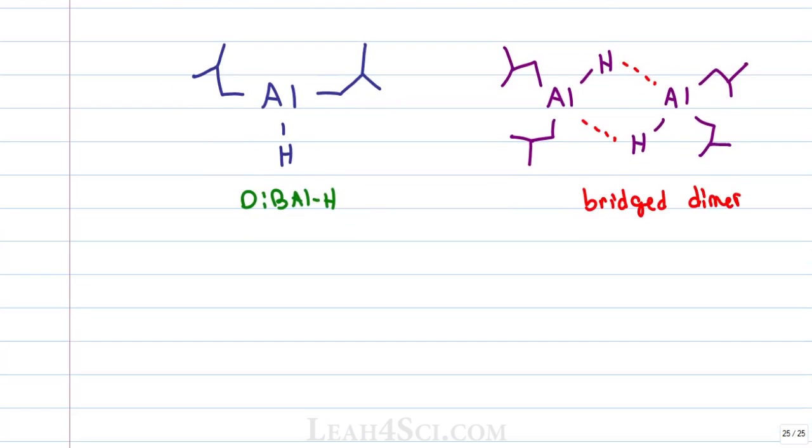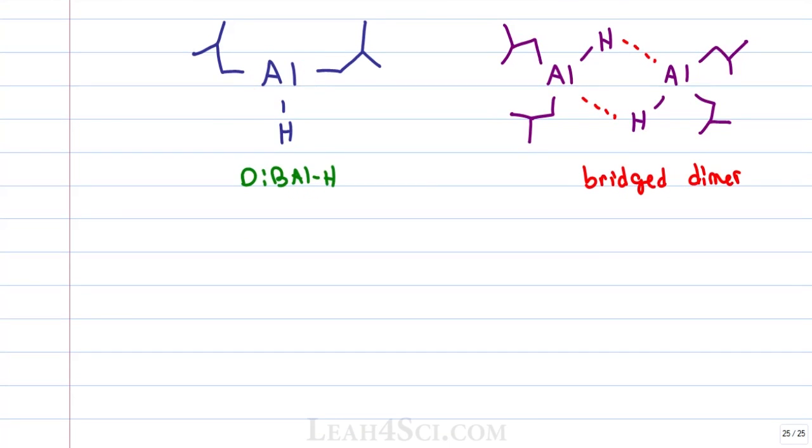The key to understanding this reagent is recognizing that you have an Al in the center with a bound hydrogen. This should remind you of another reducing agent we looked at which is LiAlH4. Lithium aluminum hydride had Li positive and AlH4 negative where aluminum was central and hydride was the atom that did the reduction.